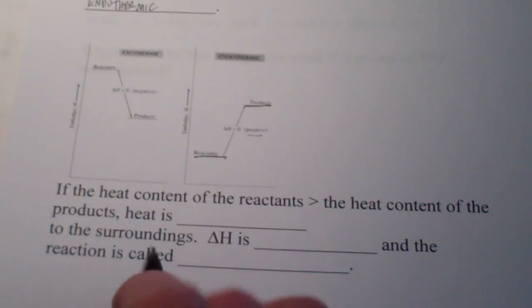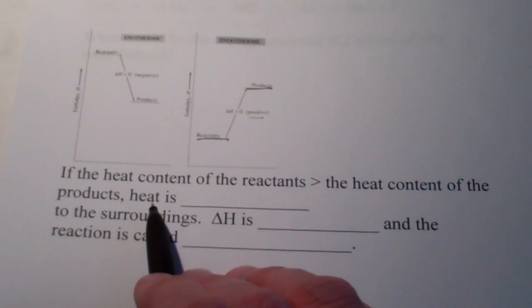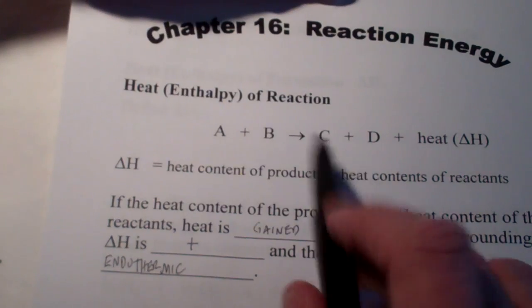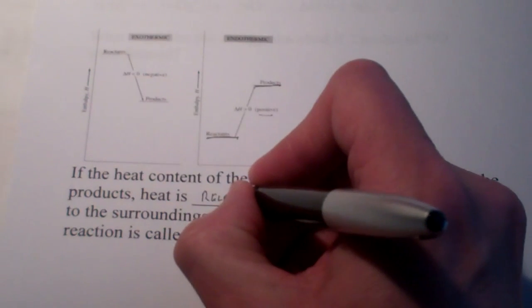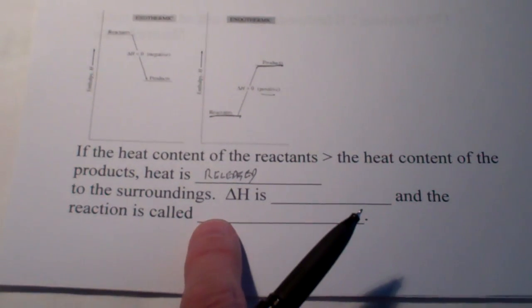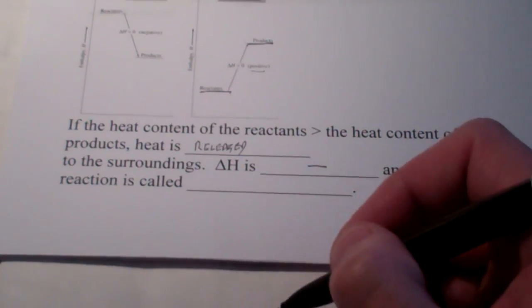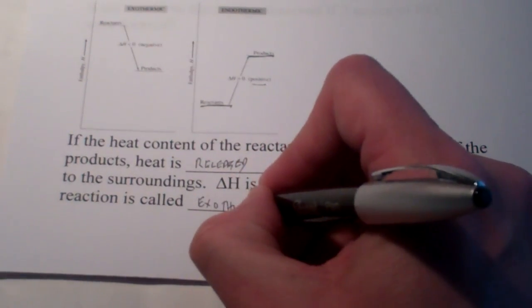Now, the opposite. What if the heat content of my reactants is greater than the heat content of my products? So, these guys here have more energy than what I end up with. Where does the extra energy go? Well, heat is going to be released, or given off, to the surroundings. Delta H would have a negative sign, and these reactions, since heat is being released, are called exothermic.